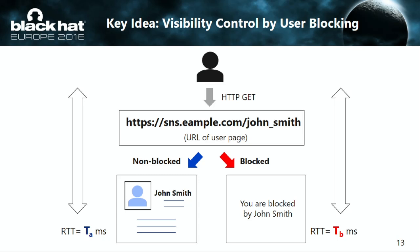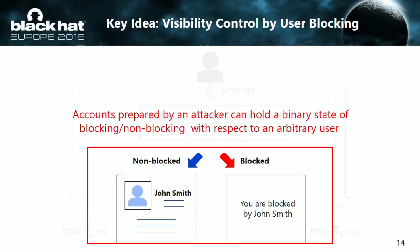Our key insight is that the blocking feature enables a user to control the visibility of another user in the same service. Since the content size and server processes are different, the RTT of requests for blocking and non-blocking pages show different distributions. An attacker can use this difference to estimate whether a website visitor is blocked from an account or not. This is the fundamental principle of our attack — the user blocking feature designed to suppress harmful users can now be turned against harmless users to identify their social accounts.